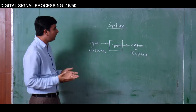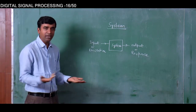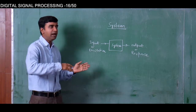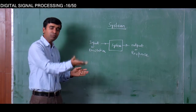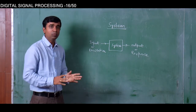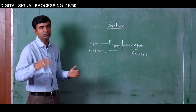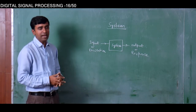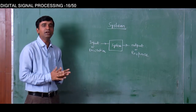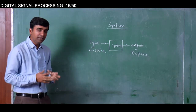What will be a standard definition of a system? A system is basically a physical entity which takes input in one form and gives output in that same form, or it can give output in another form depending on the type of application. In our case, as we are dealing with digital signals, our system will be a discrete time system.